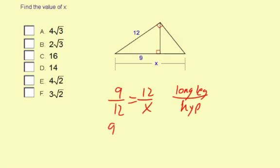9 times x is 9x, and 12 times 12 is 144. Divided by 9: 144 divided by 9 is 16, so x equals 16. The answer is C.